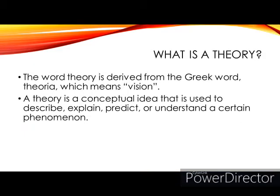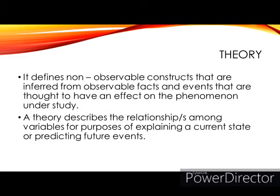First, let us define the concept of a theory. What is a theory? The word theory is derived from the Greek word theoria, which means vision. A theory is a conceptual idea that is used to describe, explain, predict, or understand a certain phenomenon. It defines non-observable constructs that are inferred from observable facts and events that are thought to have an effect on a phenomenon under study. A theory describes a relationship or relationships among variables for purposes of explaining a current state or predicting future events.